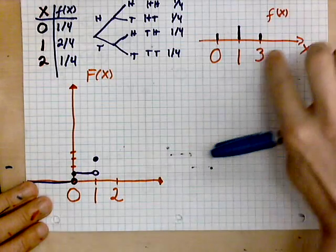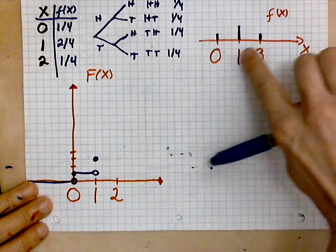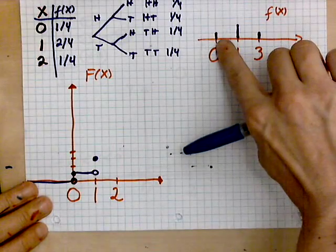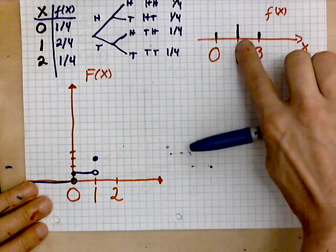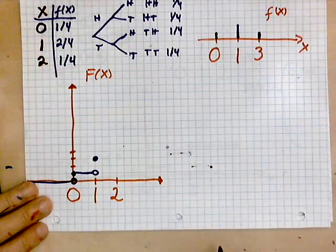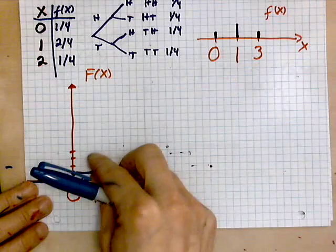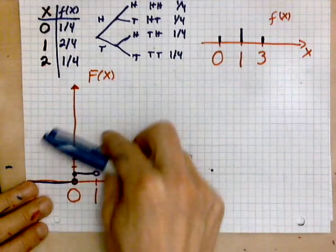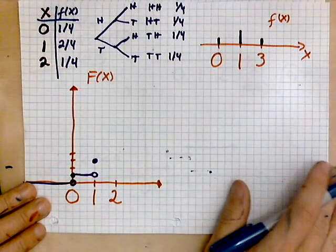How do we know that we should jump to three fourths? Because when you look at the probability function, to the left of zero, nothing. At zero, there's a jump of one quarter. At one, there's a jump of two quarters. So let's imagine taking this little segment and placing it over here, that causes the jump in the probability.